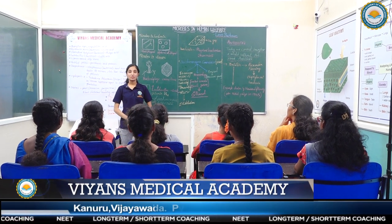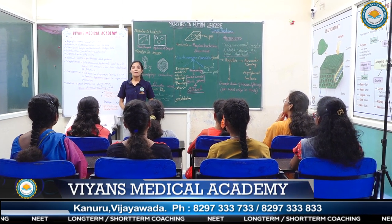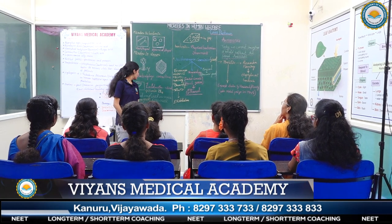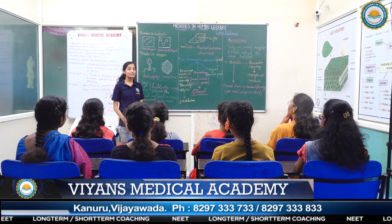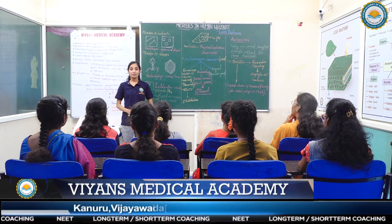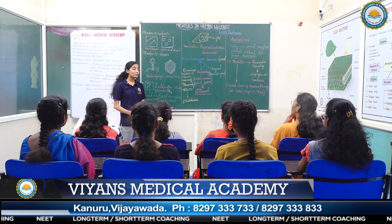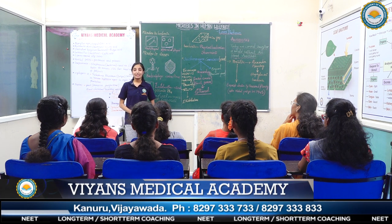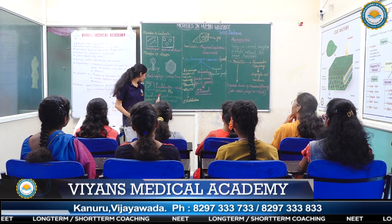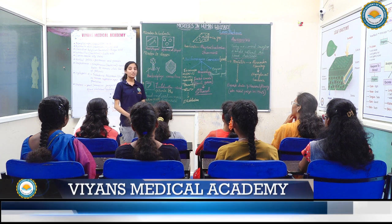Microbes in household products. We use many microbes and microbially derived products almost every day. The most common example is the production of curd from milk. Microorganisms such as Lactobacillus and others, commonly called lactic acid bacteria, grow in milk and convert it into curd, improving its nutritional quality by increasing vitamin B12. Similarly, the dough used for making bread is fermented by Saccharomyces cerevisiae, also called baker's yeast.